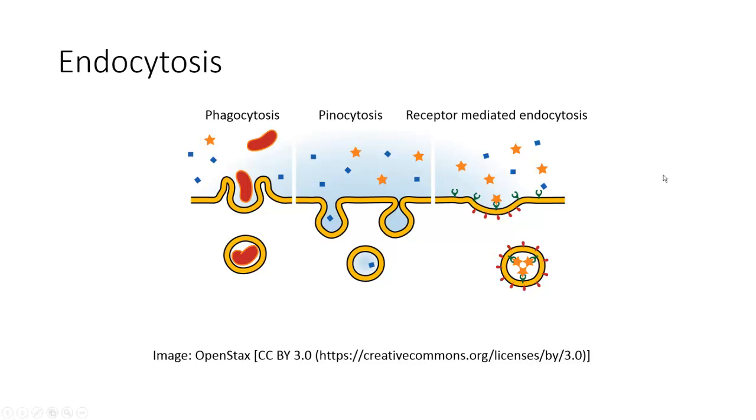The cell, this little invagination, this little pit on the surface of the cell is coated on the extracellular surface with receptors specific for a particular molecule, in this case the orange star molecule. That pit is also coated on the intracellular surface with a protein called clathrin.